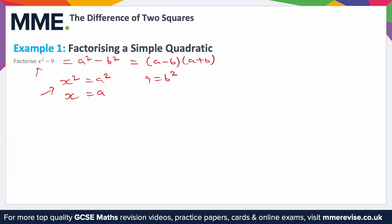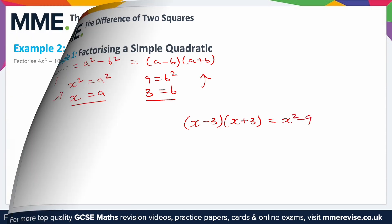For the second equation, we do the same thing and square root both sides, giving us 3 is equal to b. From there we just substitute these into the factorised form, so that ends up as x minus 3 times x plus 3. These two brackets, x minus 3 and x plus 3, are completely equivalent to x squared minus 9.